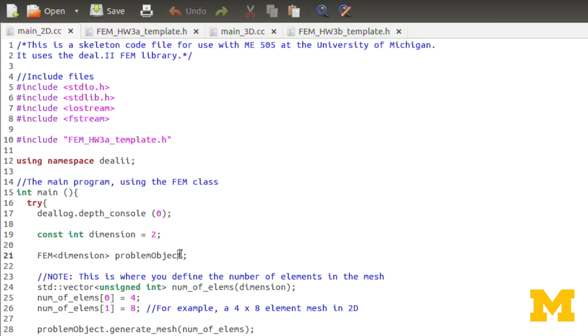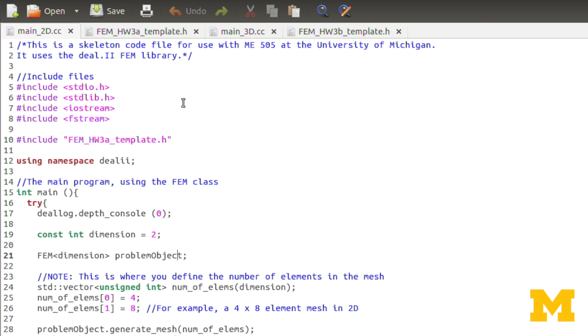Another difference, or two other differences, are that in this case, our constructor for problem object, for our finite element class, we don't have any inputs to the constructor. Because we're only doing linear basis functions, so we don't have to input the Lagrangian function order. And since I've already split up the problem into a 2D and a 3D problem, there aren't any further sub-problems after that. So there are no inputs to the constructor.